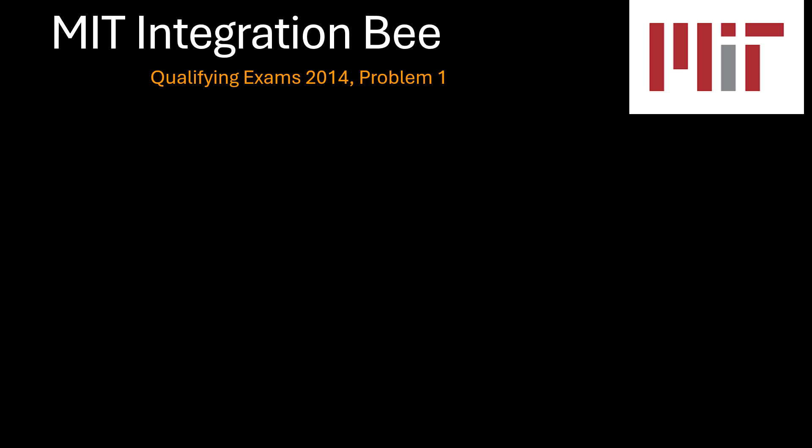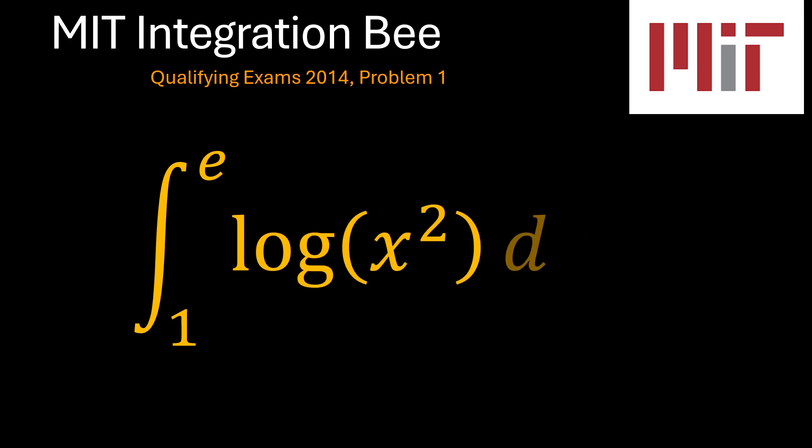Thank you very much. So now we have moved on to the MIT Integration Bee qualifying exams 2014, and this is problem number one, which is the definite integral from x equals 1 to x equals e of the natural logarithm of x squared. So let's see how we may be able to solve this problem.